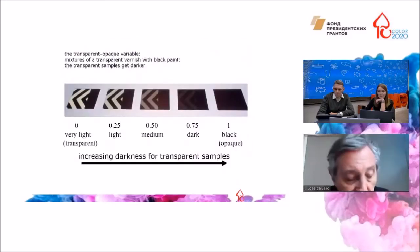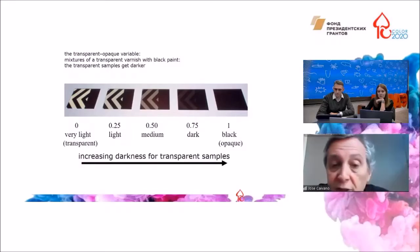In this scale of cessia, we can see the variable that changes along the axis going from transparent to opaque. On the left, a transparent layer of varnish allows to see very clearly the black and white pattern behind. The varnish is gradually mixing with black opaque paint, and the scale increases in darkness with decreasing degrees of transparency.